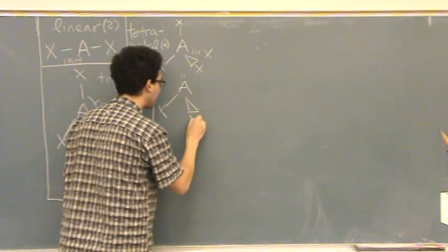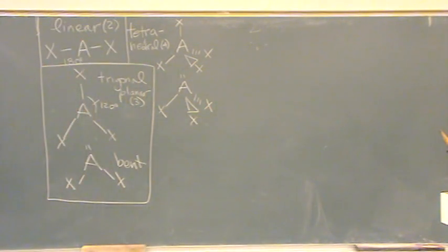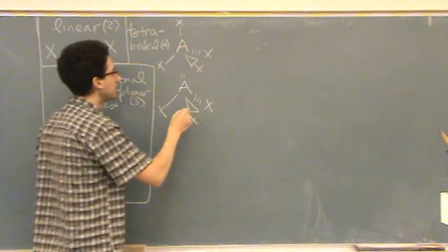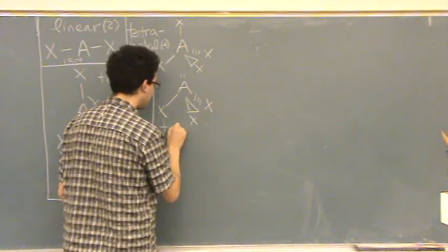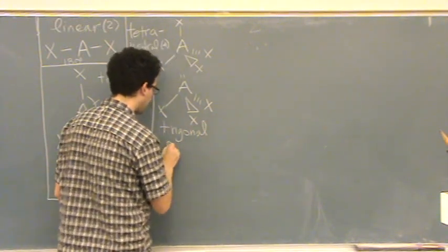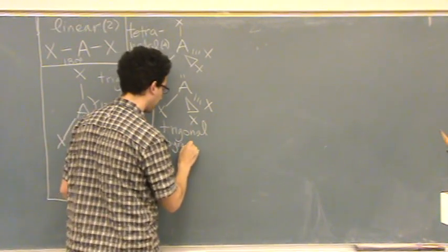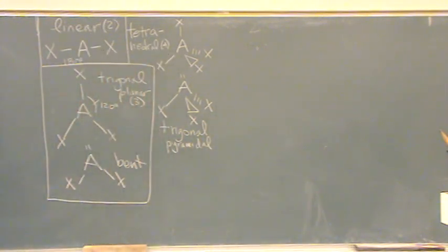If you think something else is more pretty, you can do that. Okay, this is different. This is the trigonal pyramidal. Trigonal pyramidal. It should look like a triangle on the base, so the base of this pyramid is a triangle.